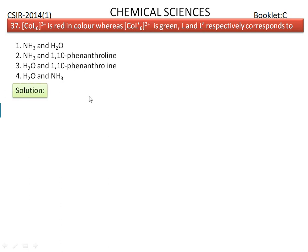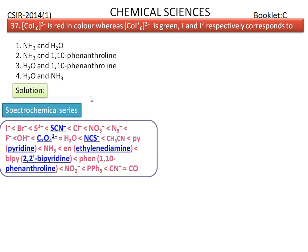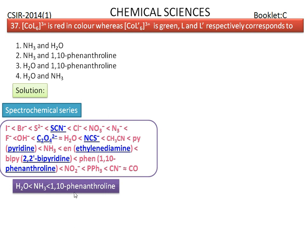According to the spectrochemical series, 1,10-phenanthroline is the strongest field ligand, then amine, then aqua. However, 1,10-phenanthroline is a bidentate ligand, whereas L and L-prime are monodentate ligands, so we neglect 1,10-phenanthroline from the options.